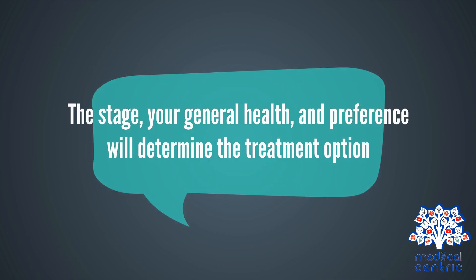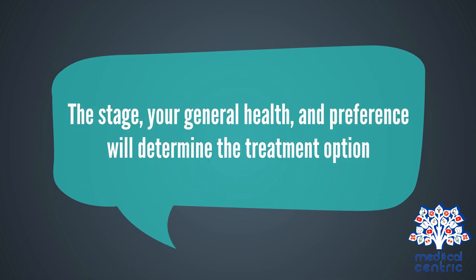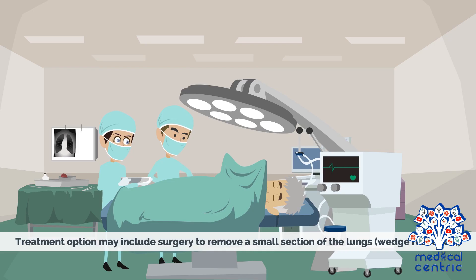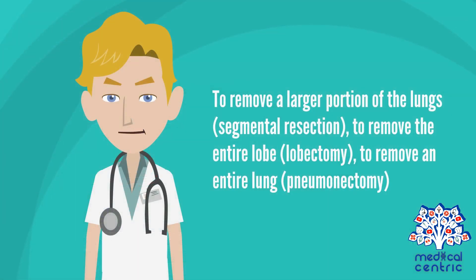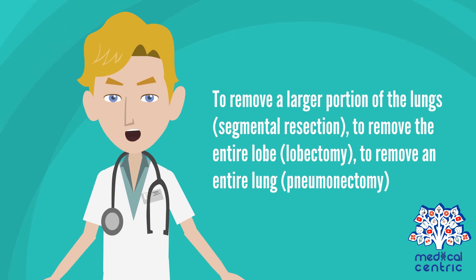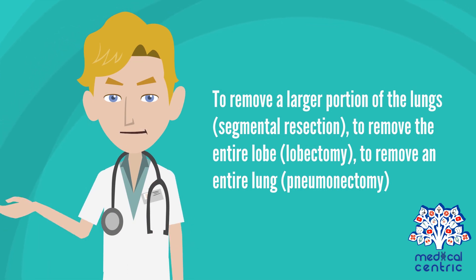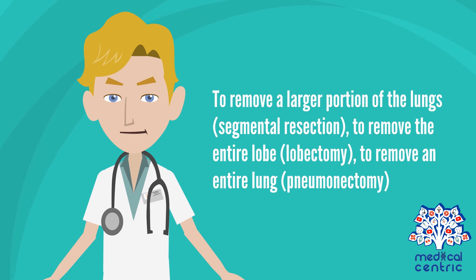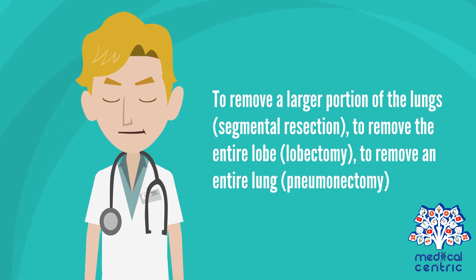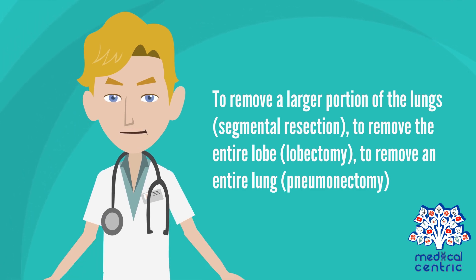Treatment. The stage, your general health, and preference will determine the treatment option. Treatment options may include surgery to remove a small section of the lungs, known as wedge resection; to remove a larger portion of the lungs, called segmental resection; to remove the entire lobe, called lobectomy; or to remove an entire lung, called pneumonectomy.